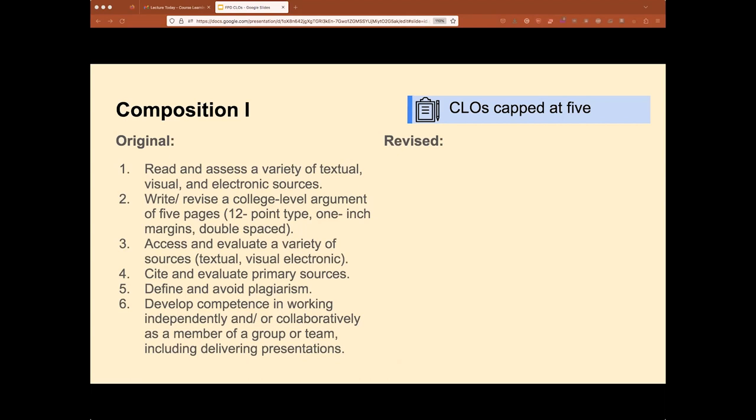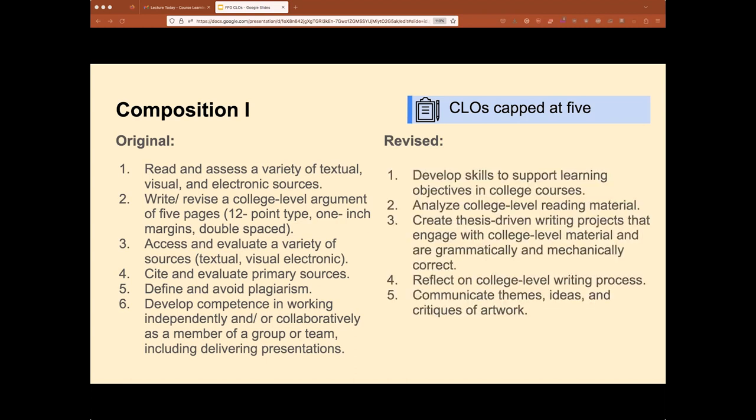One thing you'll notice about that original outcome, that's focusing on a content expectation, a specific task and a product that would come out of that. And that felt very rigid to us. Similarly, if we look at something like number five, define and avoid plagiarism, there's many ways you could approach that process. But in terms of the outcomes, it was very specific and we felt kind of limiting.